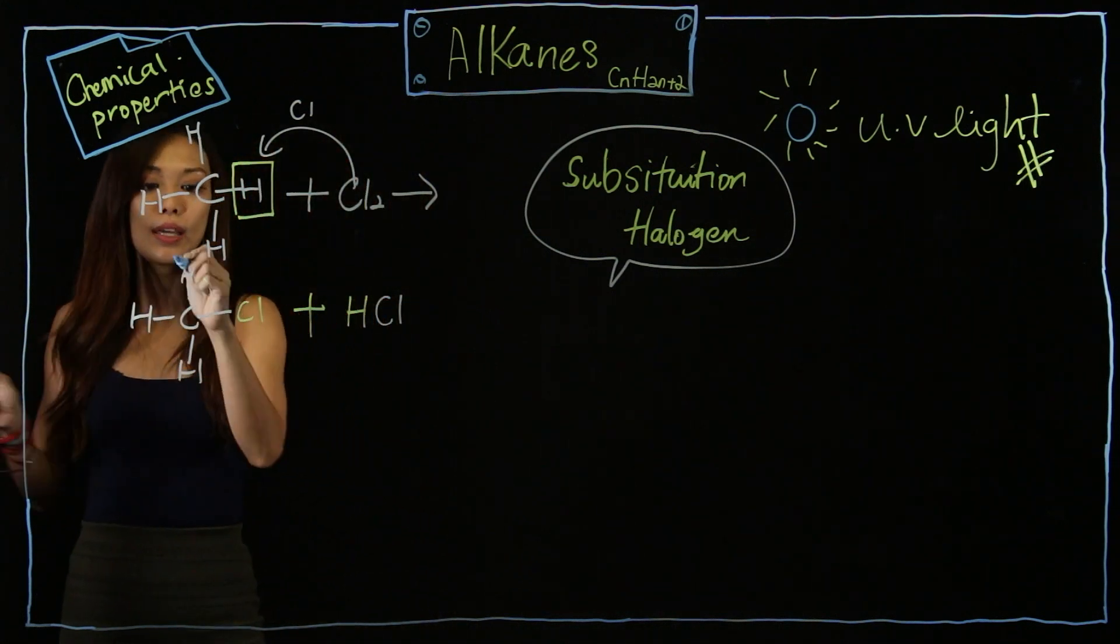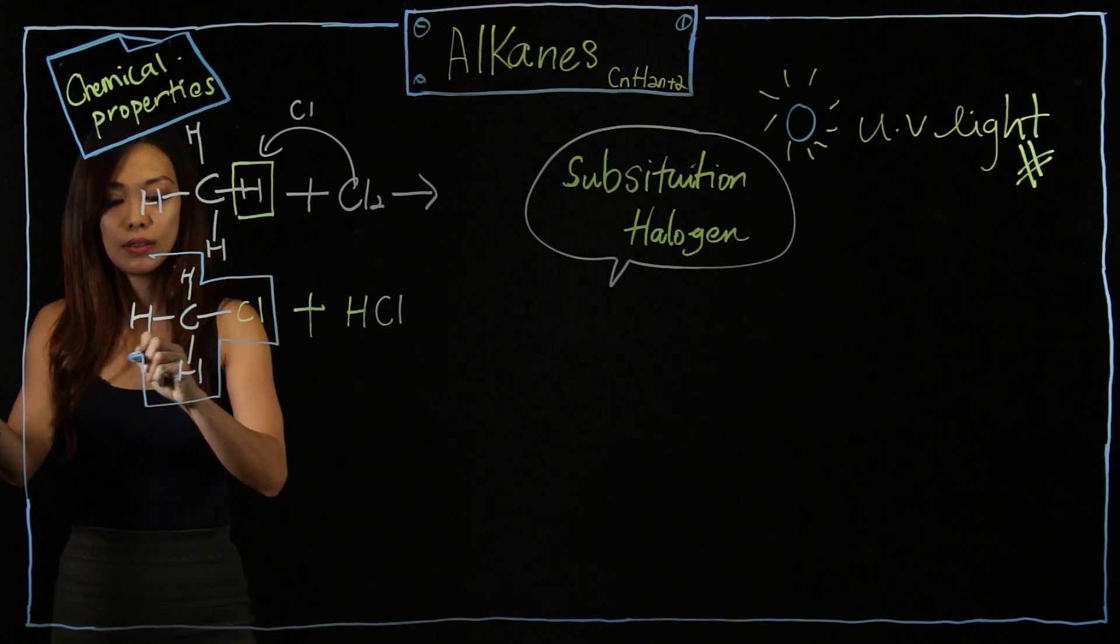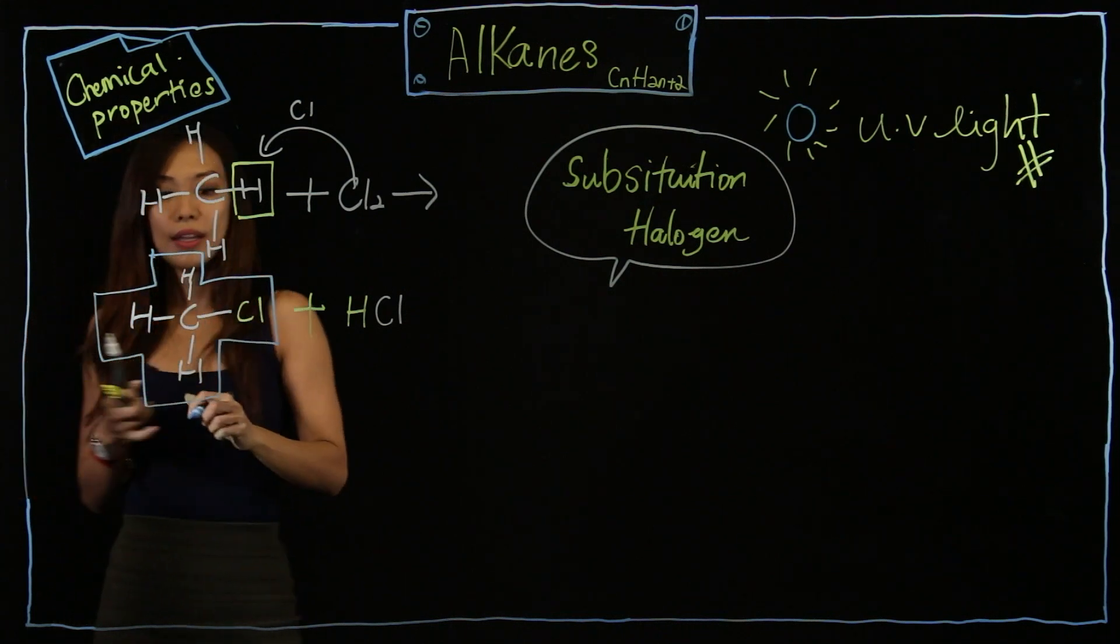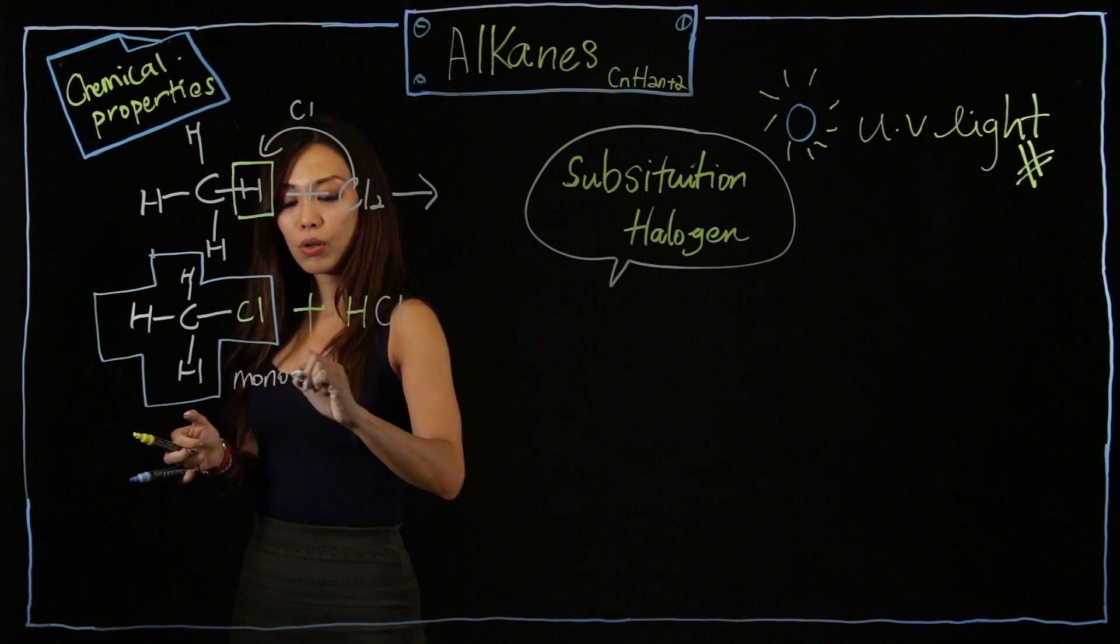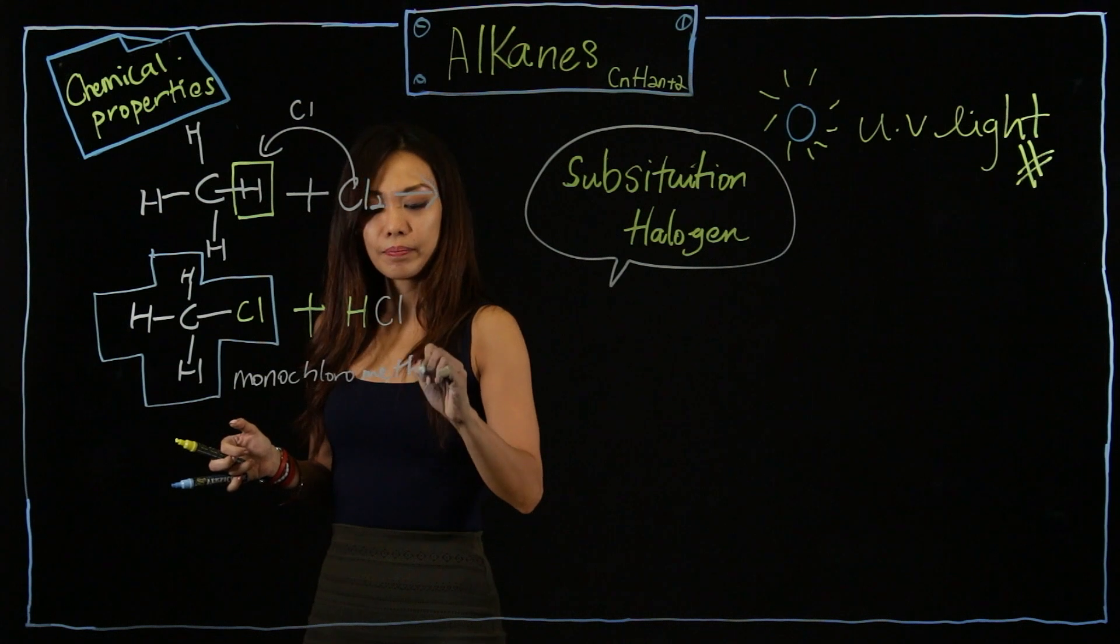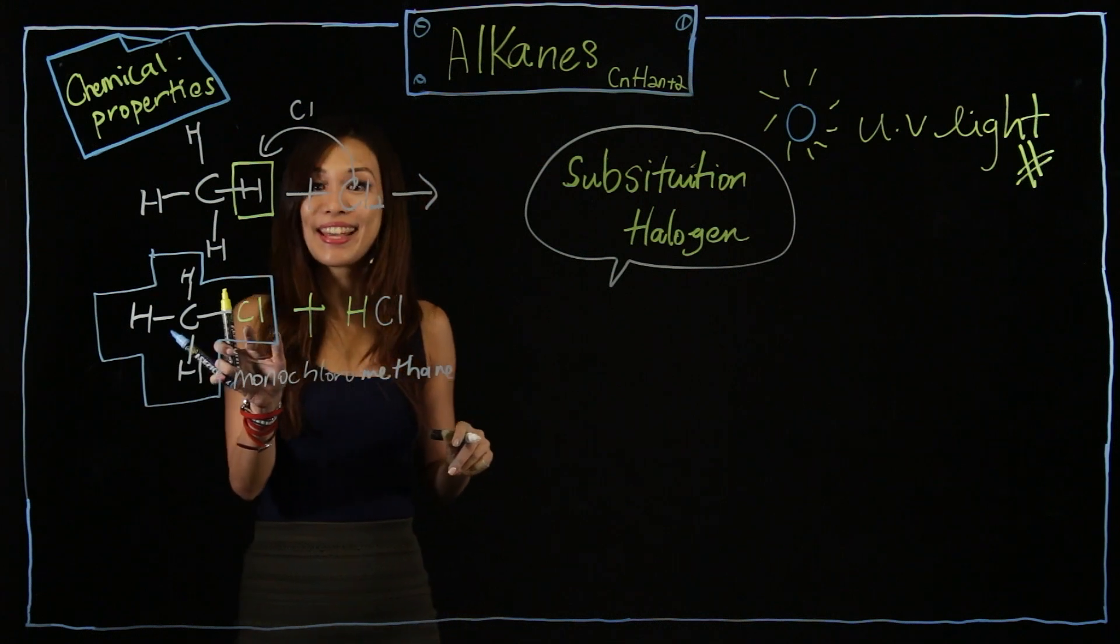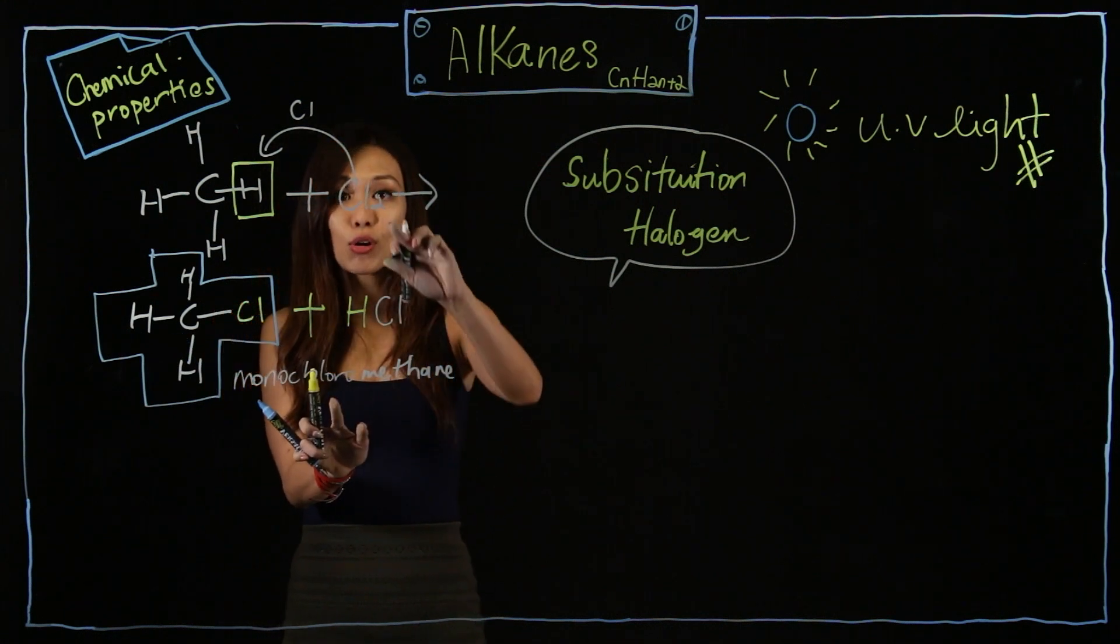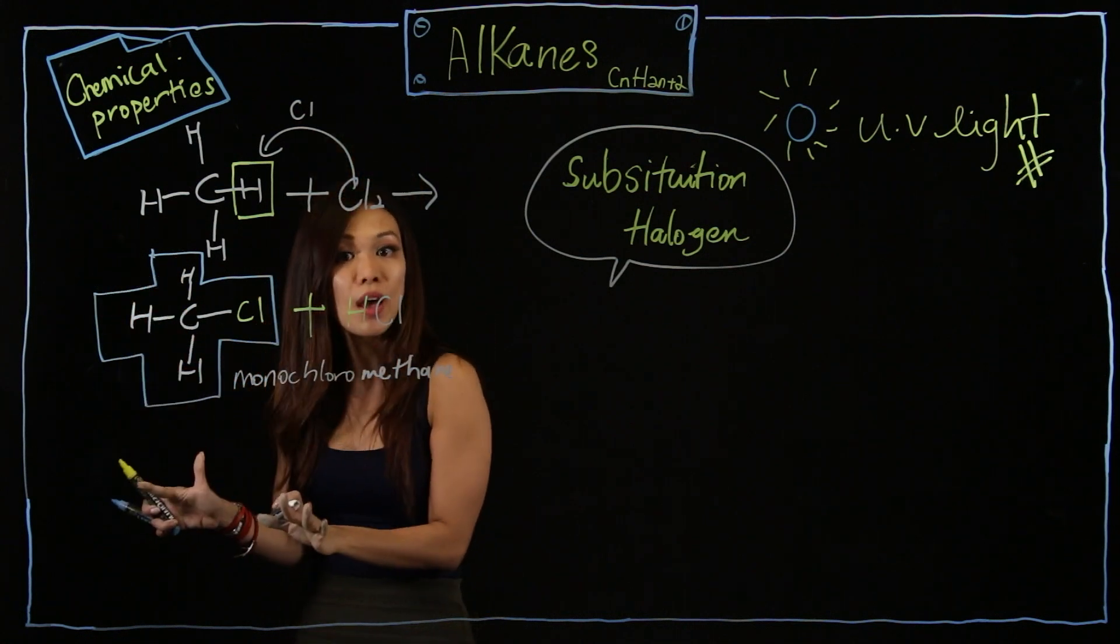So this portion here is called monochloromethane. Mono, because it's 1 Cl. Chloro, because it's chlorine. Methane, because the main structure is methane. So do I stop here? No.